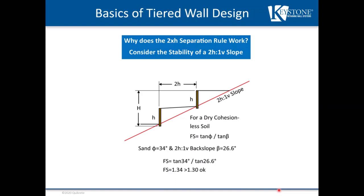Why does the 2H rule work? Consider a 2 to 1 slope. The stability factor of safety for a dry cohesionless soil equals tangent of the internal friction angle of the soil divided by tangent of the slope angle. For a 34 degree sand, that yields a safety factor of 1.34, above the normally required 1.30 safety factor. This simple calculation does not include cohesion, which is present to some degree in most in situ soils and would increase the safety factor, offsetting lower friction angle soils.